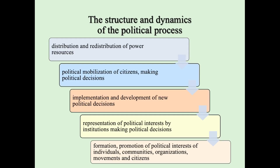Here you can see the structure and dynamics of the political process. The political process is dynamic. The first step is distribution and redistribution of power sources. The second is political mobilization of citizens and making political decisions. The third is implementation and development of new political decisions and representation of political interests by institutions making political decisions. And finally, we have formation and promotion of political interests of individuals, communities, organizations, movements, and citizens. Every political process is unique and has its own structure and features.